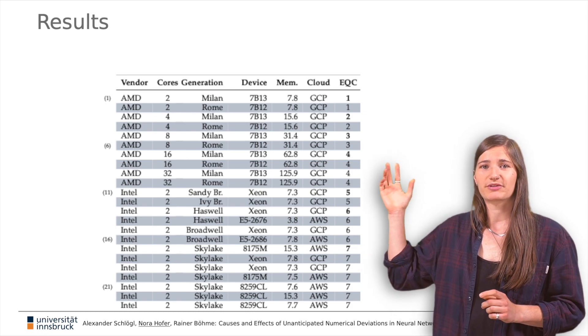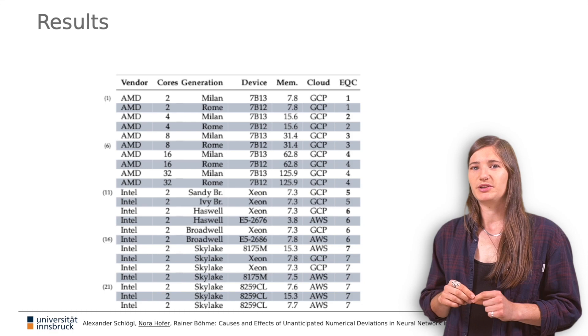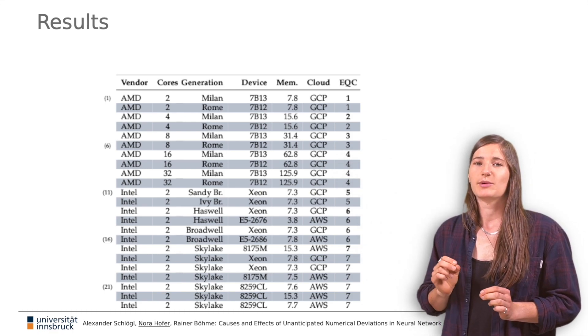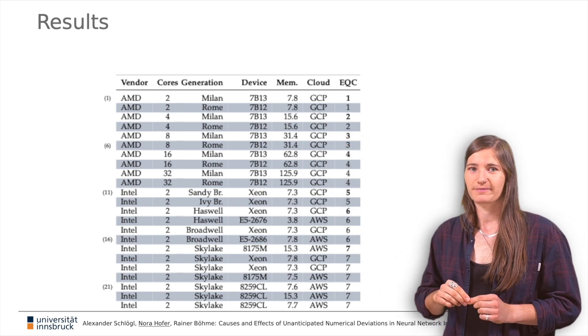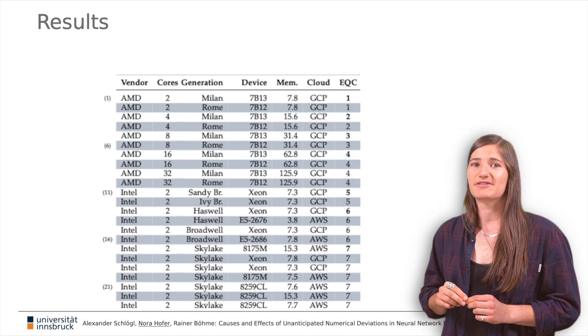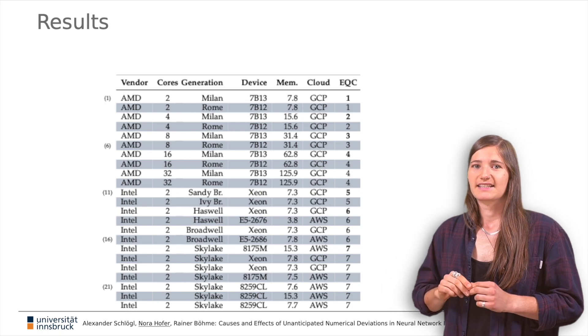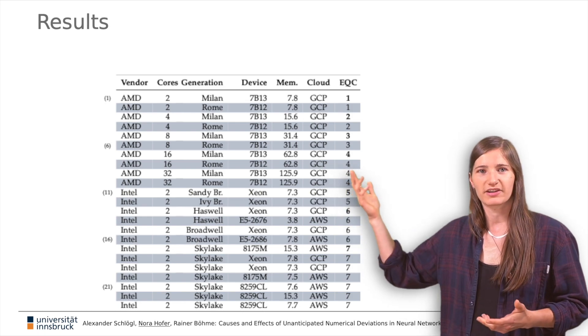We count the number of different outputs in the rightmost column. The AMD-based CPU systems in the first two rows produce exactly the same output. We say they form one equivalence class indexed with one. The system in the third row produces a different output, hence we assign equivalence class 2. The next system reproduces this output exactly, hence it falls in the same class and so on.